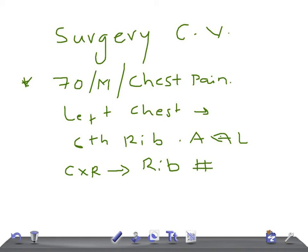Remember, in elderly patients, splinting and hyperventilation can lead to pneumonia. So what you have to do is provide local pain relief, which can also be achieved by nerve blocking. That's it for this case — thank you so much.